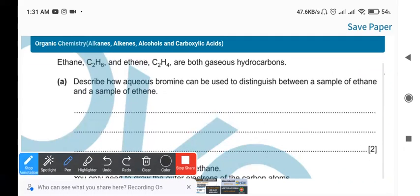Aqueous bromine can be used to distinguish between ethane and ethene. Aqueous bromine will readily react with ethene because ethene has a double bond, so the double bond will get broken down by bromine and the bromine will be added readily. So the bromine will lose its color.